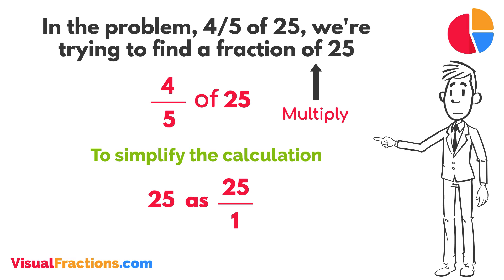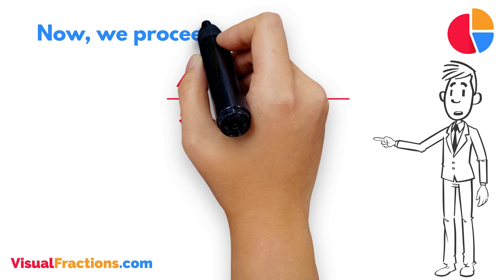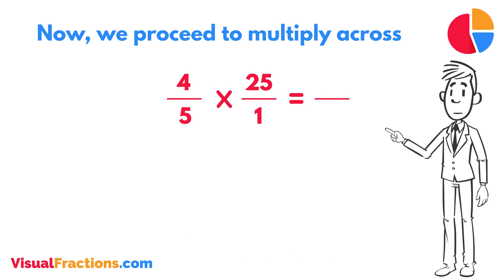This transformation makes it easier to work with our numbers as fractions. Now, we proceed to multiply across. First, multiply the numerators: 4 times 25 equals 100.